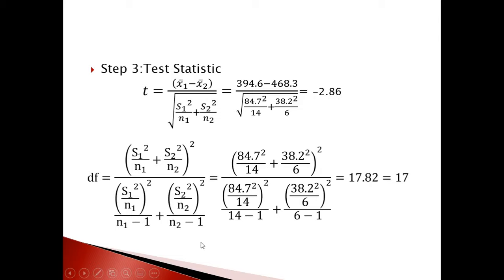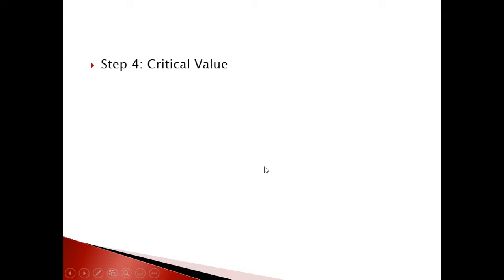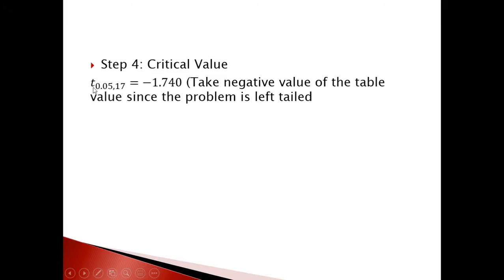Use the degree of freedom equation with the known values to get 17.82, which we round down to 17. Step 4: With alpha = 0.05 and degree of freedom 17, look up t-table to get t₀.₀₅,₁₇ = 1.74. Since this is a left tail test, the critical value is negative 1.74.